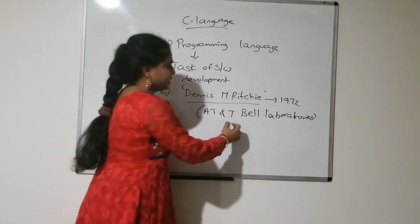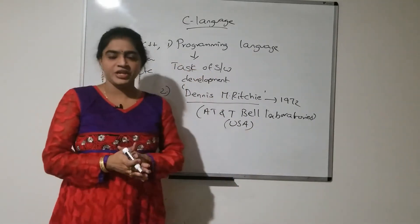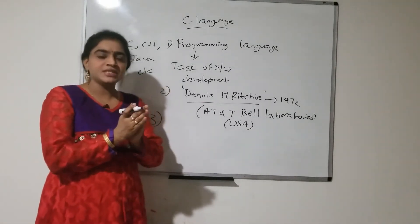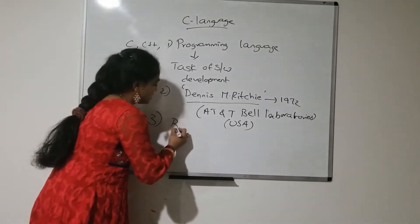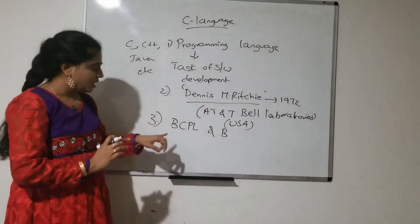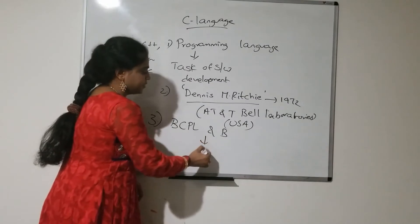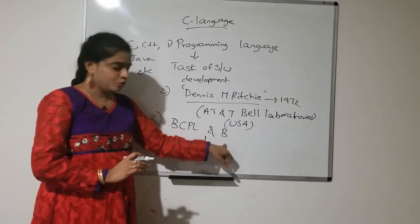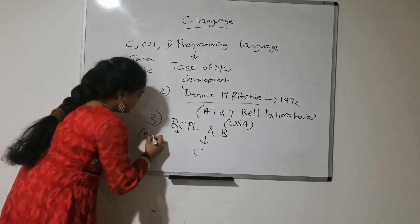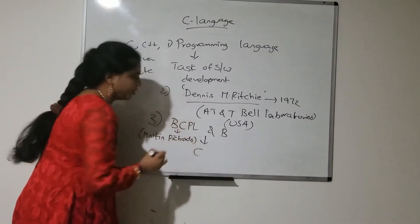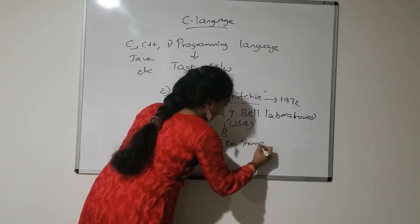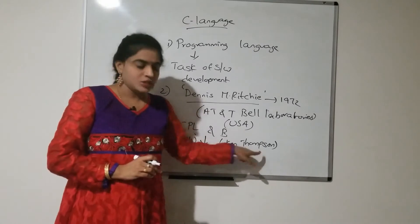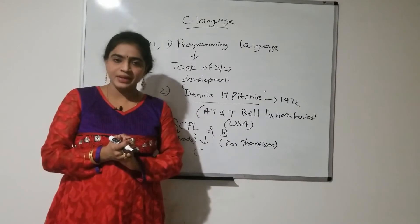AT&T Bell Laboratories is a research centre located in the USA, and there he introduced and developed this C language. This C language evolved from two programming languages: BCPL and B language. BCPL was introduced by Martin Richards, and B language was introduced by Ken Thompson. C is evolved from these two programming languages — BCPL and B language.